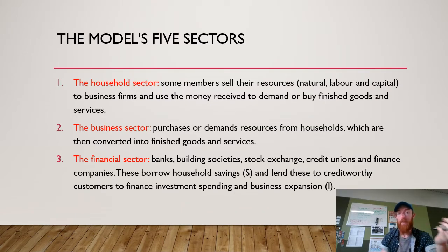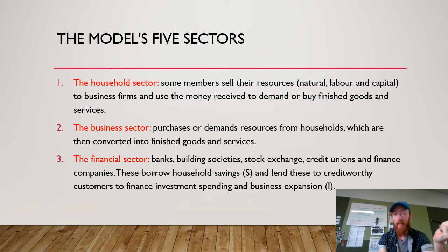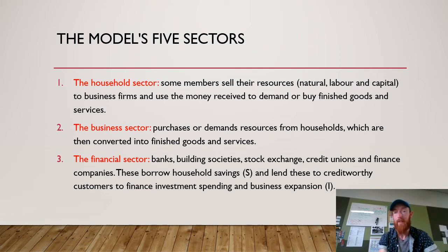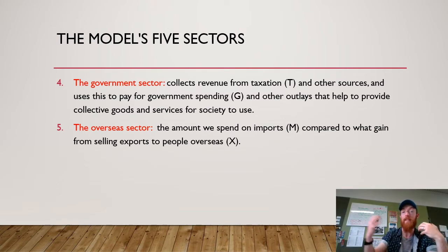From this model we have five different sectors. The household sector: some members sell their resources — labour, land, or capital — to businesses and use the income they receive to demand finished goods and services. The business sector purchases or demands resources from households, converting them into finished goods and services. The financial sector — banks, building societies, the stock exchange, credit unions, and financial companies — borrows household savings and lends to credit-worthy customers to finance investment spending and business expansion. The government sector collects taxation revenue and uses it to pay for government spending and outlays that provide collective goods and services for society. The overseas sector is the balance of imports — money sent to other countries — versus exports, which is money coming in when overseas countries buy our goods and services.